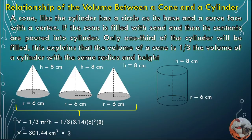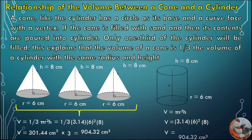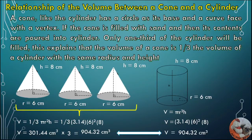If you multiply by 3, the total volume of the 3 cones equals 904.32 cubic centimeters. Now, the volume of the cylinder using V = π × r² × h equals 3.14 × 6² × 8, which is 904.32 cubic centimeters. You can see that the volume of 3 cones is equal to the volume of 1 cylinder.